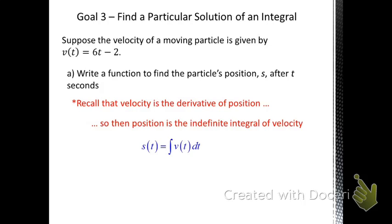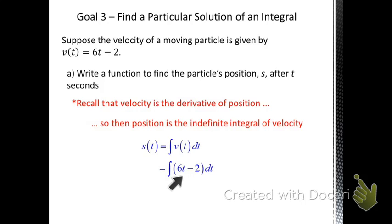So, position s is equal to the integral of the velocity function with respect to time — in this case, the integral of 6t minus 2 dt. Following our rules for integration, the integral of 6t gives 3t squared, and the integral of 2 is 2t, so we get that the position is 3t squared minus 2t plus C.